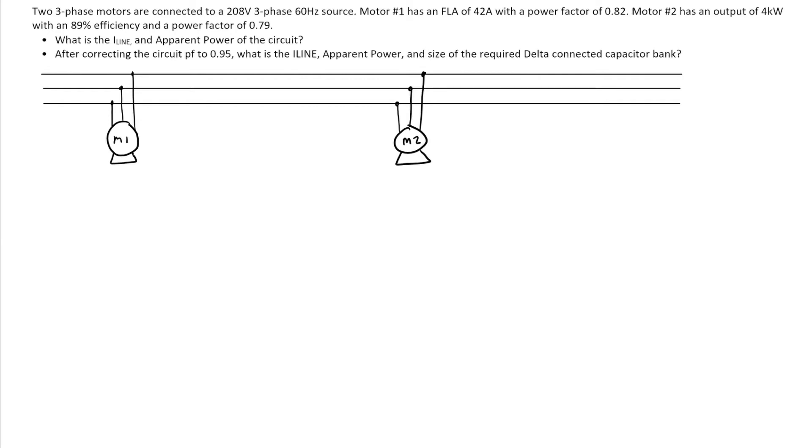Now what we've got is two three-phase motors connected to a 208 volt, 60 hertz, three-phase source. Motor one has an FLA of 42 amps, so we know FLA is our I-line with a power factor of 0.82.